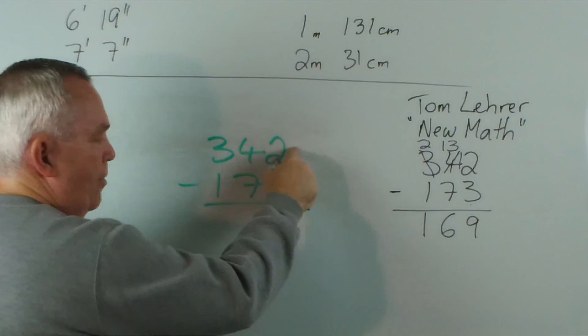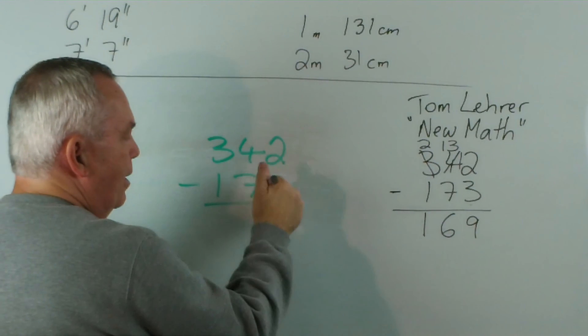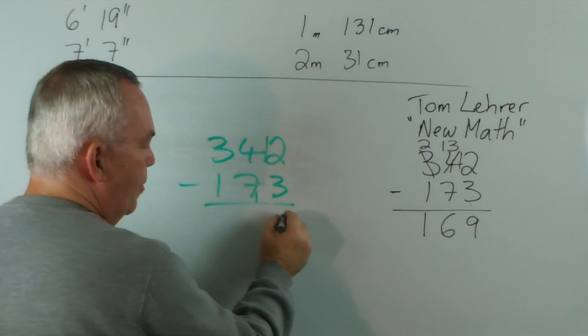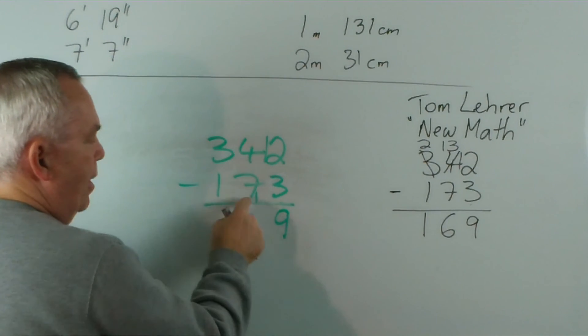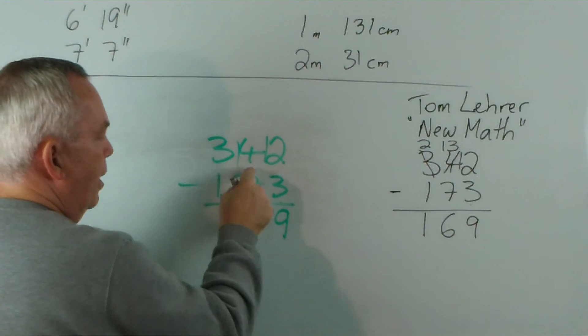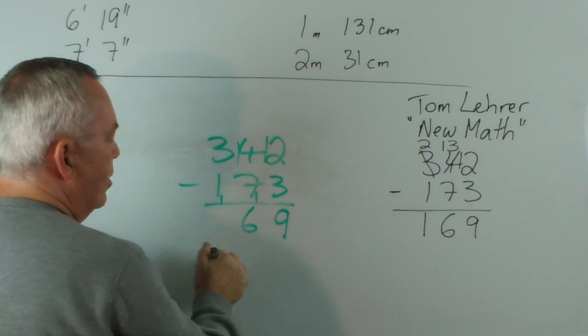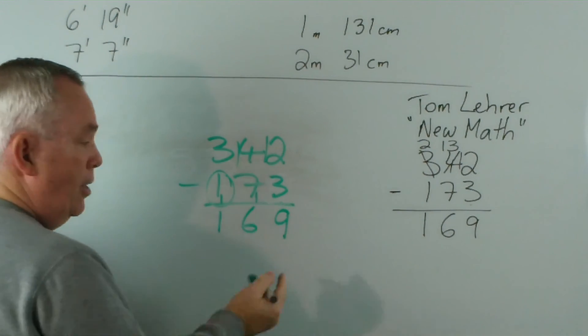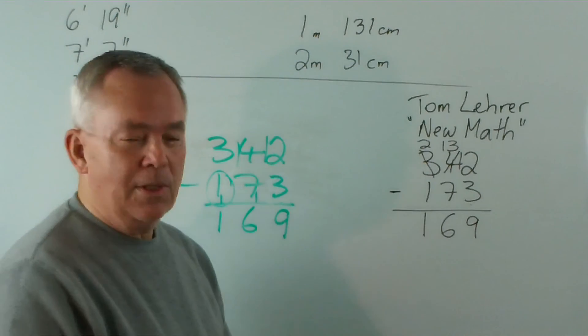12 take away 3 is 9 ... well, that wasn't much of a change ... you can't take 3 from 2 ... so, we put one up and one down ... and we go 12 take away 3 is 9 ... now, this is worth 8 ... so, you can't take 8 from 4 ... so, one up and one down ... 14 take away 8 is 6 ... and 3 take away 2 is 1 ... as you can see ... same result ...